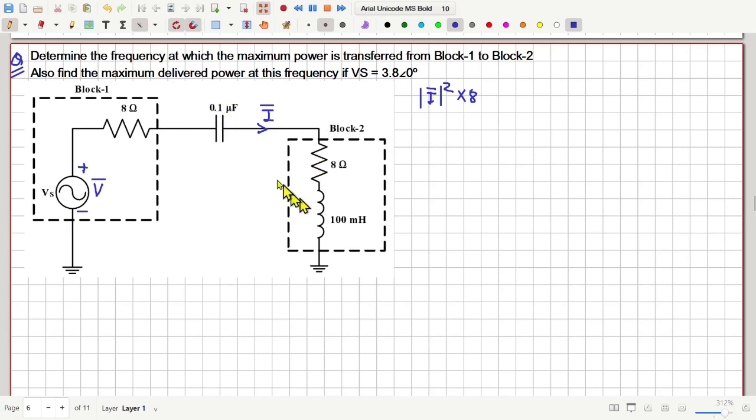For that we want 1 by omega C, 1 by omega into 0.1 micro, 0.1 micro. So, let me put 10 to the power 6 above. Now, this should be equal to omega L, that is omega multiplied by 100 milli, which is 0.1.